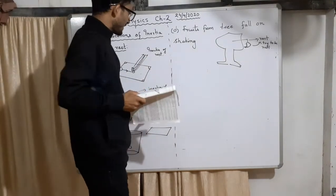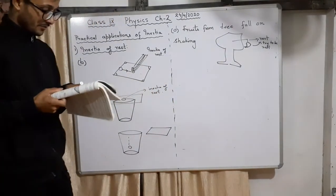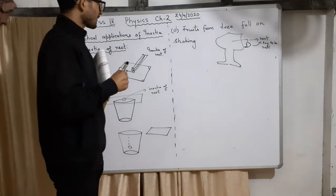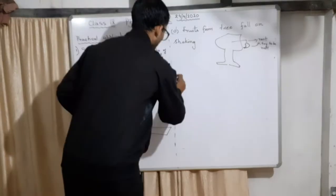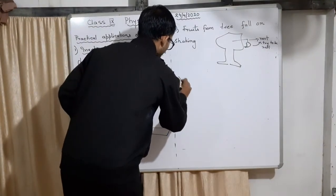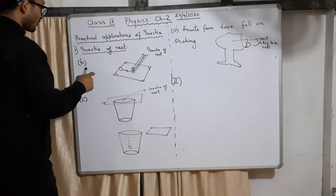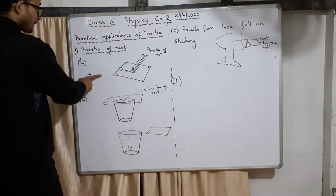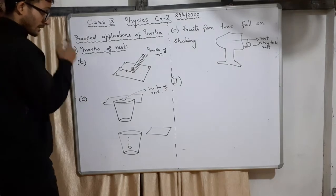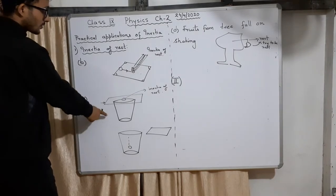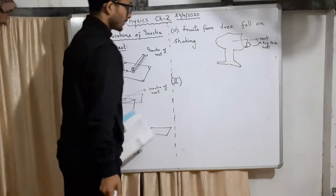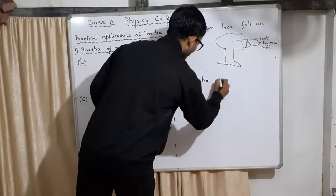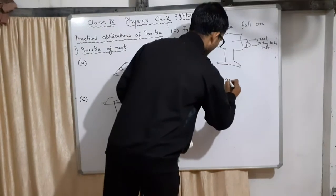You are going to read all this in the textbook in detail. These are the ideas I have given you — you can see the video again for explanations. Inertia of rest is finished. Inertia of rest has three examples: the man falling from the bus, the carrom coin, and the fruit. Number two: inertia of motion.